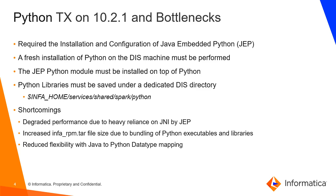The Python transformation on 10.1 was built using Java Embedded Python (JEP). It uses JNI calls to run scripts on data and to set or get column values. To make this work, we first had to install Python on the DIS machine, then install the JEP Python module. Once installed, all these libraries had to be copied to the services shared Spark Python folder. This approach had a few shortcomings: degraded performance due to heavy reliance on the Java Native Interface by JEP, increased INFRPM file size from bundling Python executables to the cluster, and reduced flexibility with Java-to-Python data type mapping.